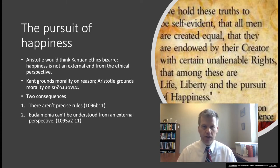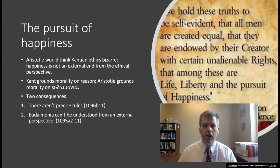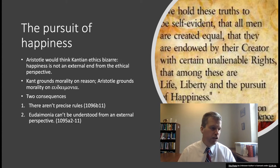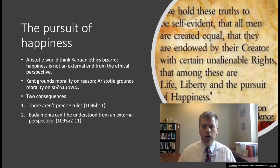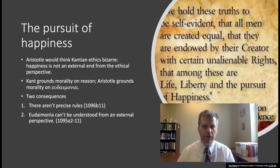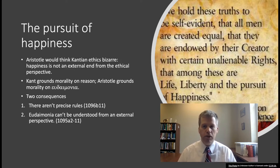Two consequences follow from grounding morality in eudaimonia. First, Aristotle thinks there aren't precise moral rules. In Nicomachean Ethics Book 1, Chapter 3, he says it's the mark of an educated person to look for precision just so far as the subject matter permits. In ethical action, you're in very particular circumstances with many competing criteria, and you have to figure out how to best perform a good act in those circumstances. You can't describe general rules that determine what you ought to do in all the situations people find themselves in.